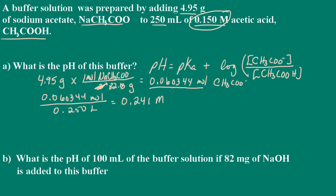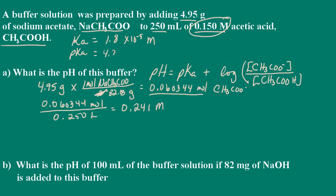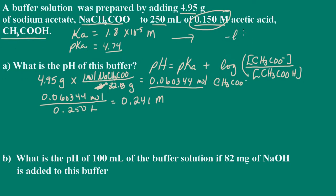The only thing we need now is our pKa, and that's something I would give you in the problem. The acid dissociation constant for acetic acid is 1.8 times 10 to the negative 5, which gives a pKa equal to 4.74. To determine pKa from Ka, you just take the negative log of the acid dissociation constant. So we're all set to go.